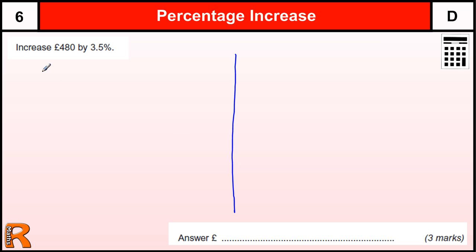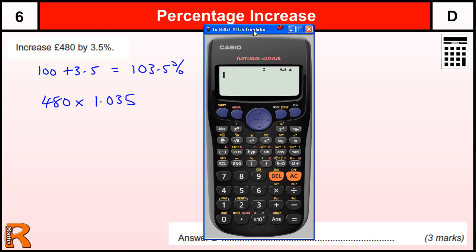The fastest way is to realize that when we are increasing by 3.5%, we are actually working out the original 100 plus the 3.5, which is 103.5%. To work out 103.5%, we just need to multiply the original amount of 480 by 1.035, because 103.5% out of 100 divided by 100 gives you that multiplier, and that is essentially all we have to do.